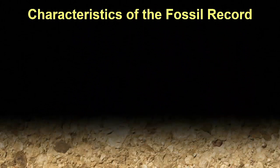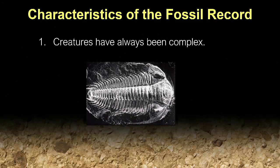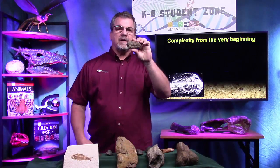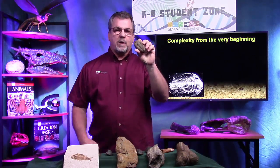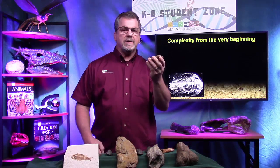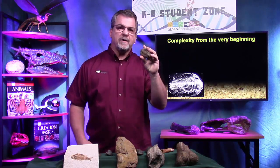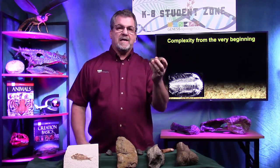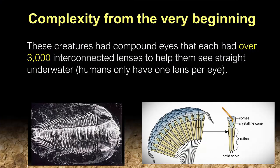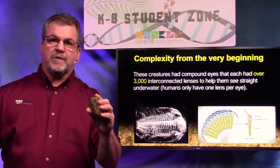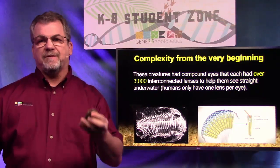Let's talk about the real fossil record. The first thing is that creatures have always been complex. This is the fossil of a trilobite, found in some of the lowest layers in the geologic column. According to evolutionists, at that level, the creatures we find there should be very, very simple. But this guy is anything but simple — he has eyes, and each eye has over three thousand lenses to help him see underwater. Does that sound simple? There are so many others that show complexity from the very beginning.